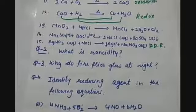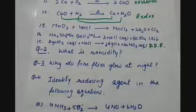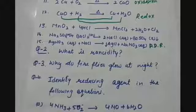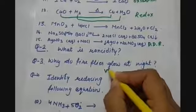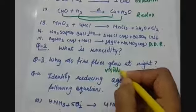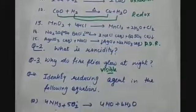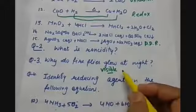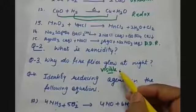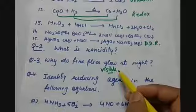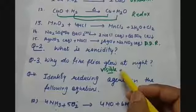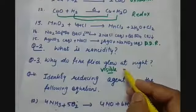Question number three: why do fireflies glow at night? This is also a chemical reaction being performed in the body of fireflies, because of which visible light is emitted. This phenomenon of producing or emitting light inside a living organism is called bioluminescence.